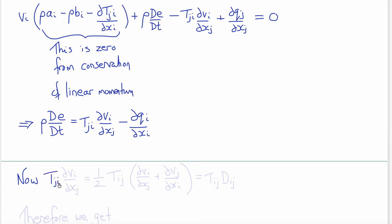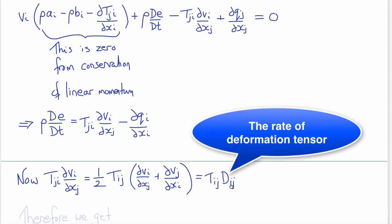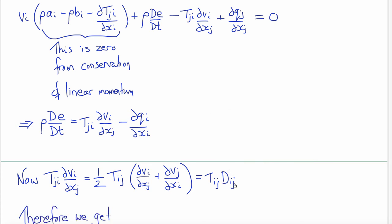Now T_{ji} ∂V_i/∂x_j could also be written as one-half T_{ij} (∂V_i/∂x_j + ∂V_j/∂x_i), because we know the stress tensor is symmetric. And one-half (∂V_i/∂x_j + ∂V_j/∂x_i) is D_{ij}, the rate of deformation tensor.